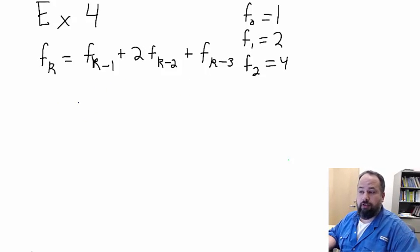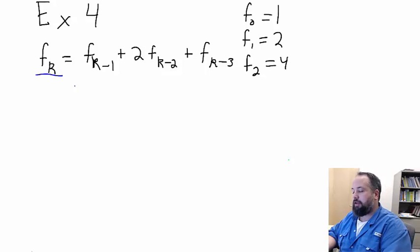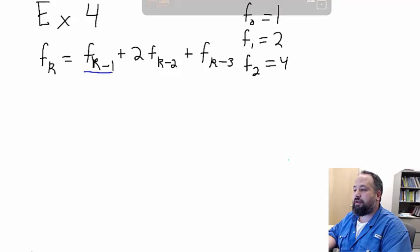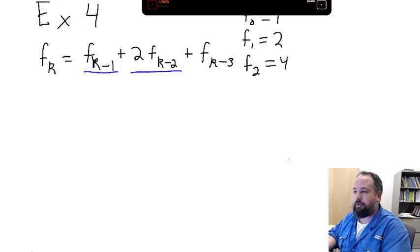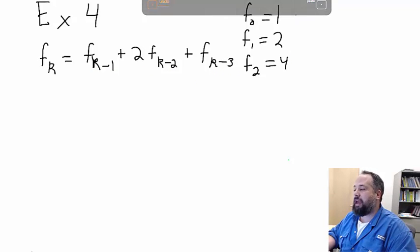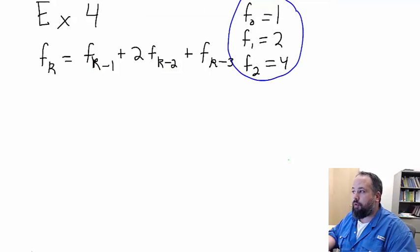Let's start with our function here. Our recursive function f of k is defined as f of k minus 1 plus 2 times f of k minus 2 plus f of k minus 3. And our base case is f of 0 is 1, f of 1 is 2, f of 2 is 4.